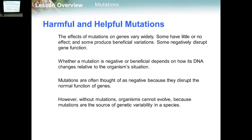There are two types of mutation: harmful or helpful. The effects of mutations on genes vary widely — some give a positive effect, some give a negative effect. Whether a mutation is negative or positive depends on how its DNA change affects the organism. Mutations are often thought of as negative because they disrupt the normal function of genes. However, without mutations, organisms cannot evolve, because mutations are the source of genetic variability in species.